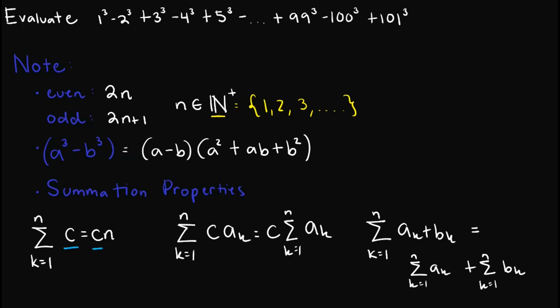The summation of a constant c is simply c times n. Then we will also need this one wherein if there is a constant and a variable that varies depending on the summation but the constant is unaffected, we can just move that out of the summation. And lastly, when we have 2 terms, we can split them up in the summation process. So take note of these.